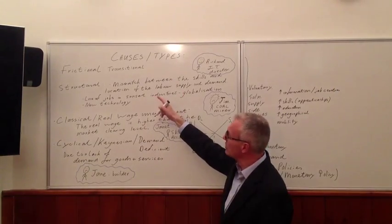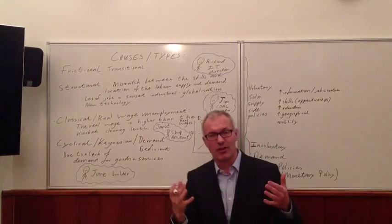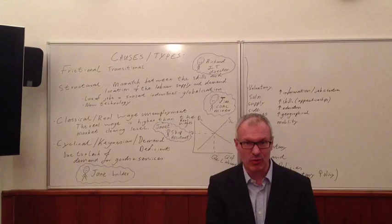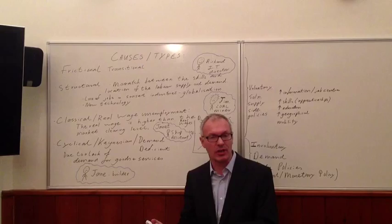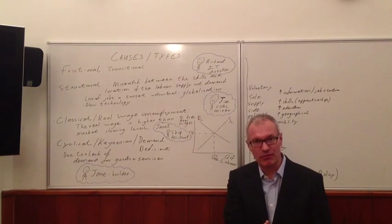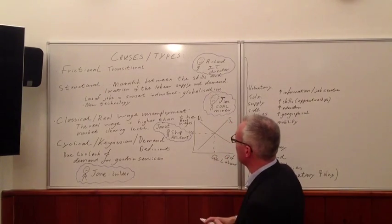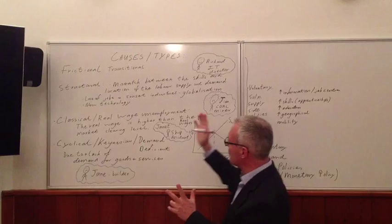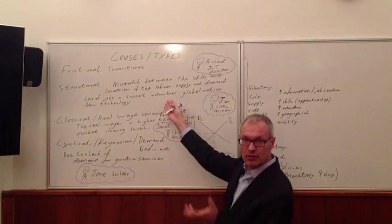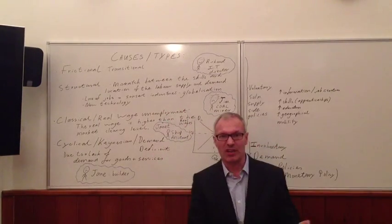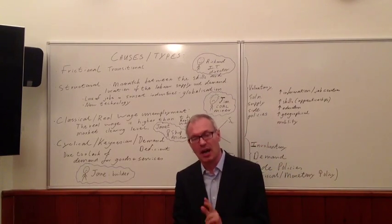The second type of unemployment is structural unemployment. This is when there's a mismatch between the skills that the labour force has and the skills that employers are looking for, or there's a mismatch between the location of workers and the location of potential employment. There are a lot of jobs in industries that are closing. For example, in the UK we've had sunset industries such as coal mining, shipbuilding, iron and steel, metalworking, and textiles.